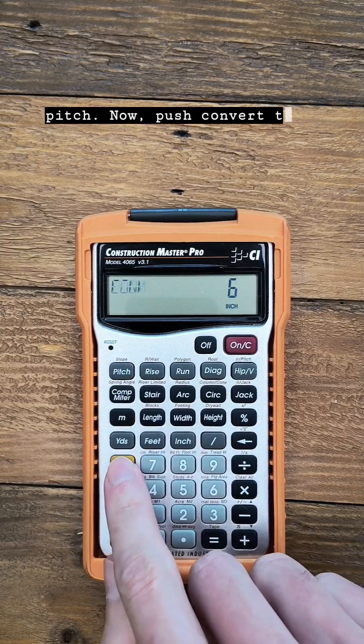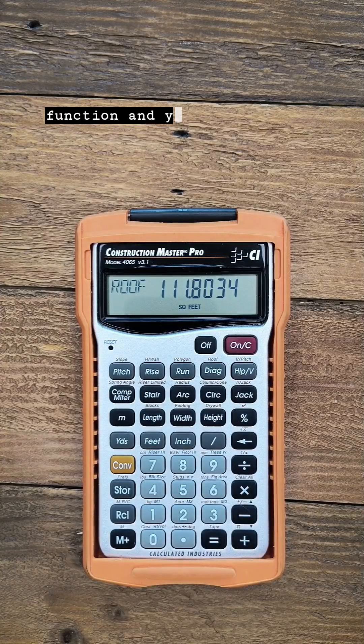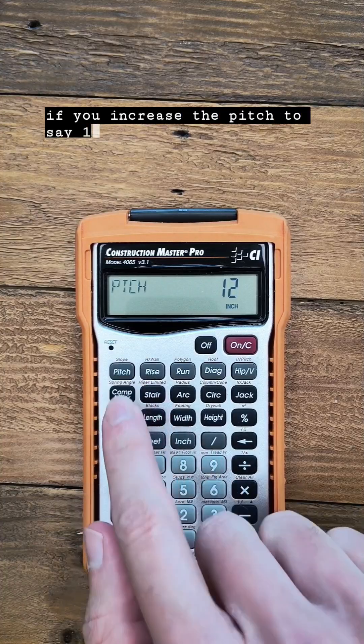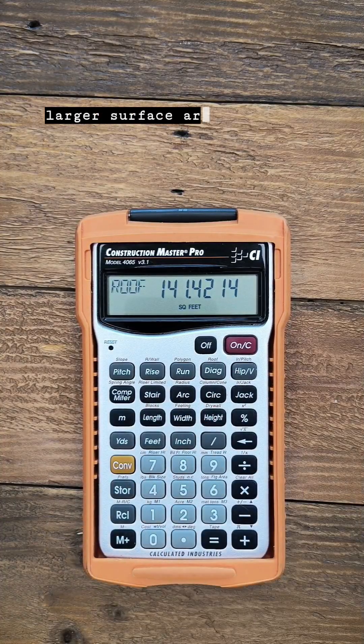Now push convert, then diag for the roof secondary function, and you'll see the surface area of the roof. If you increase the pitch to say 12 inches, you'll get a larger surface area.